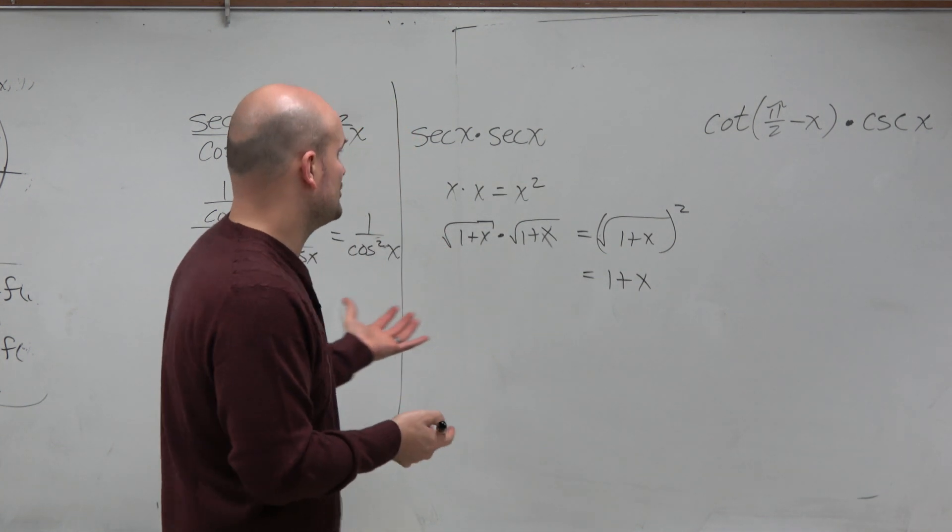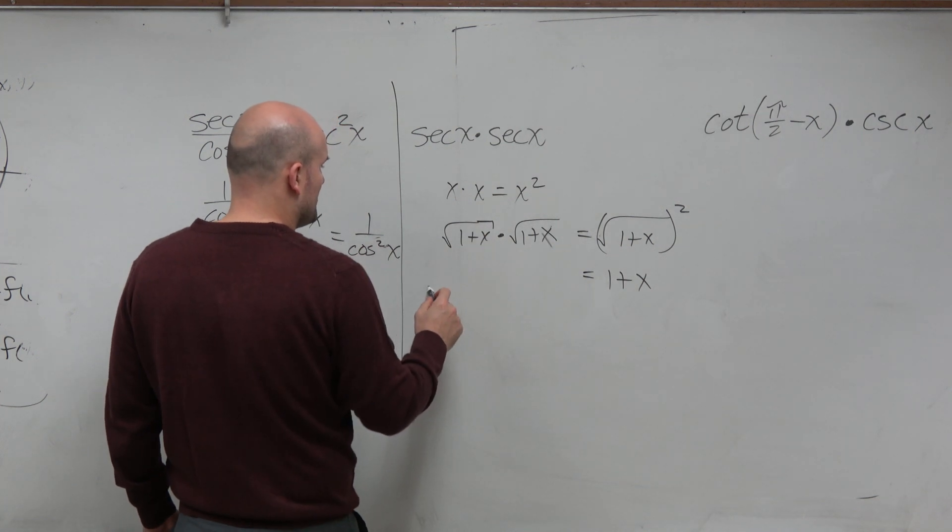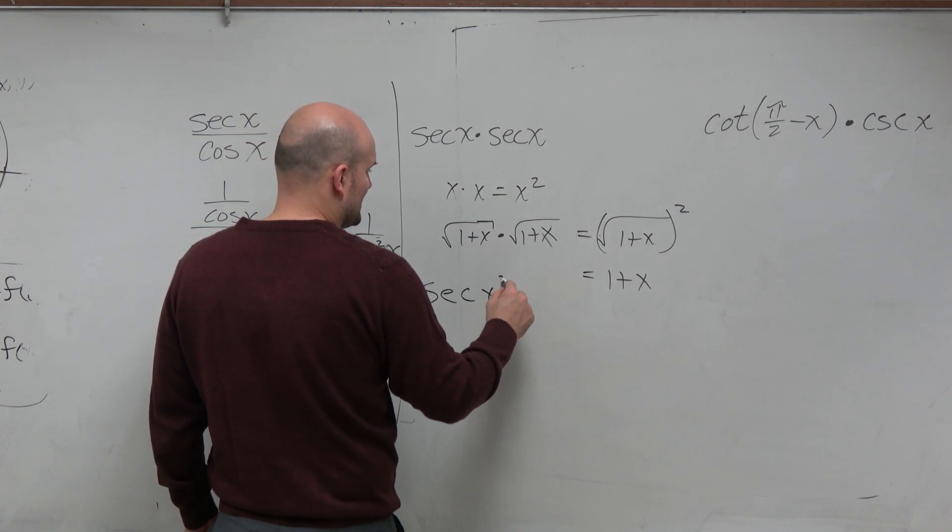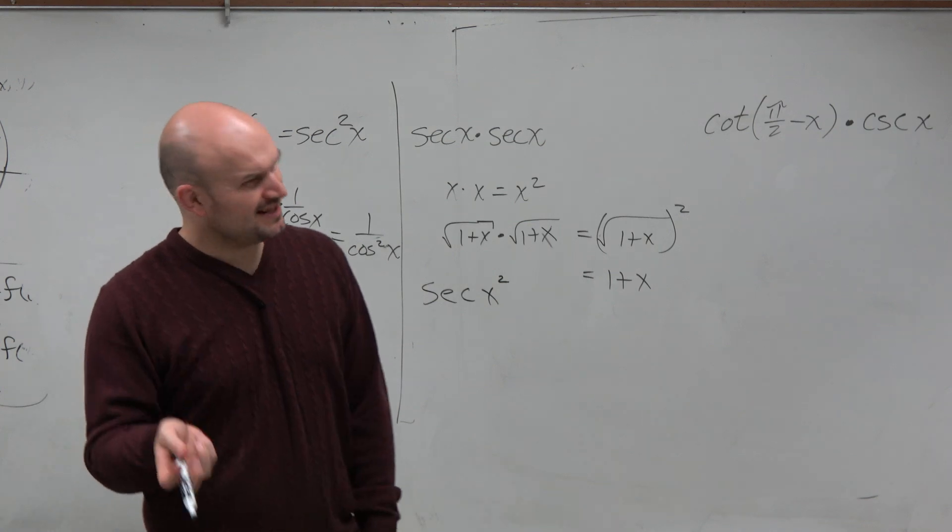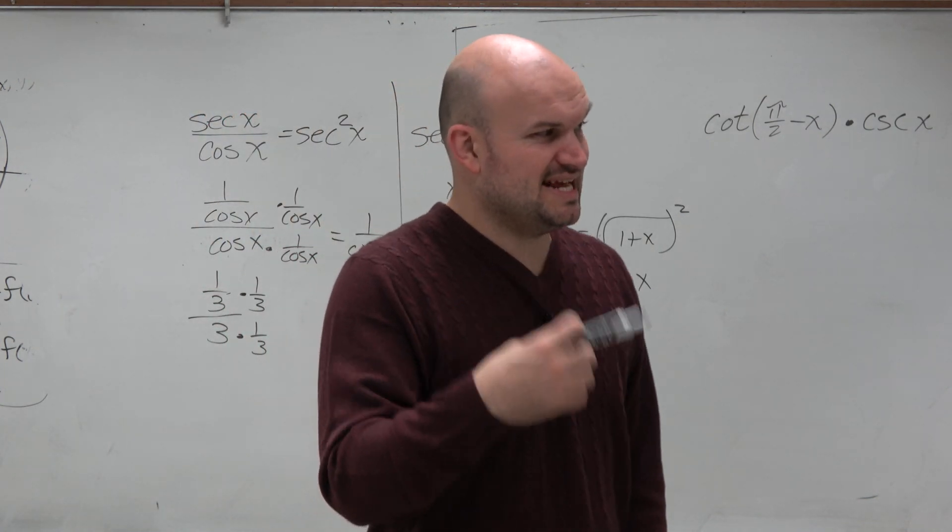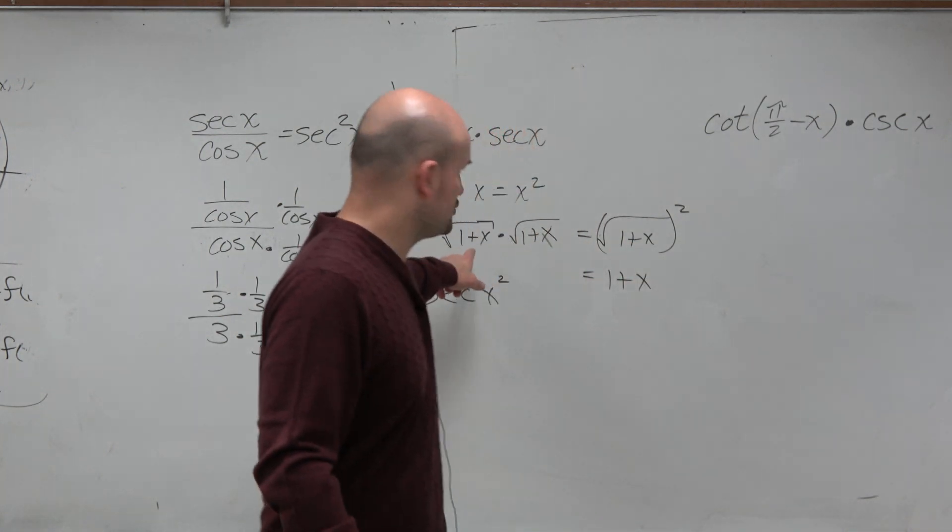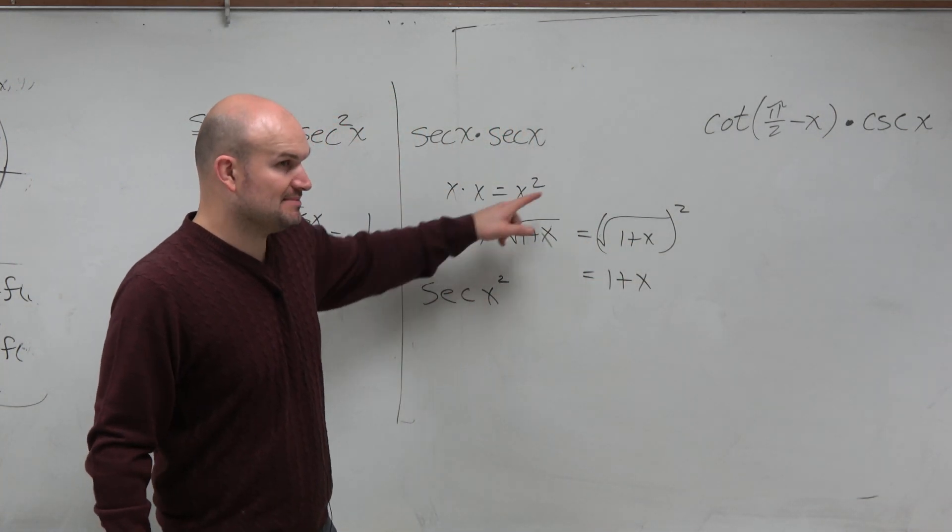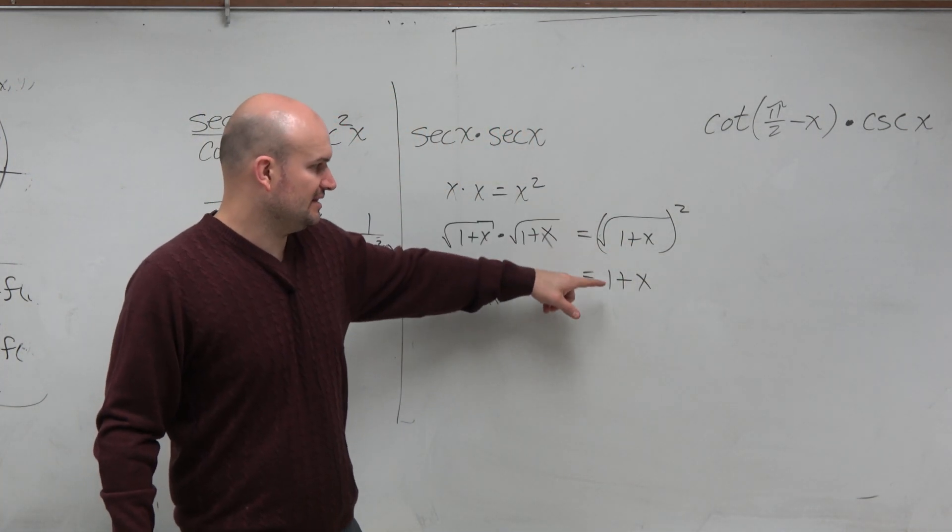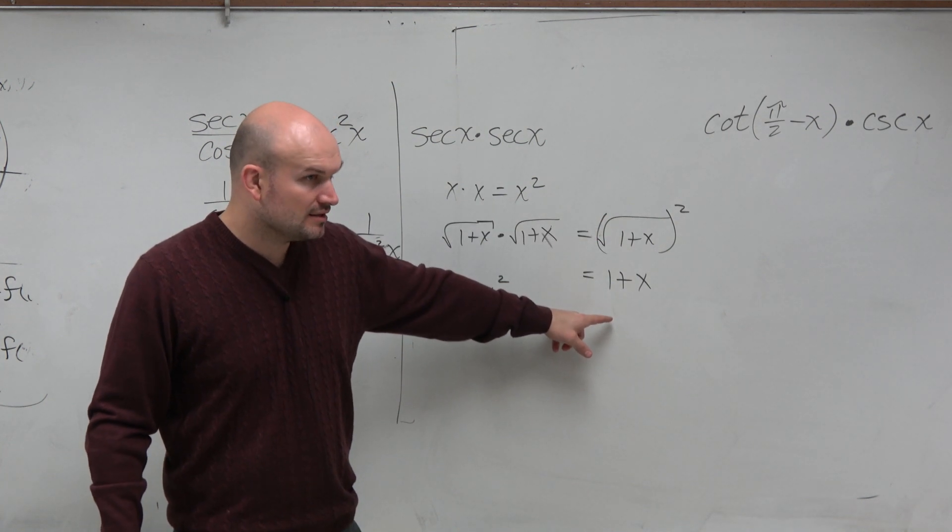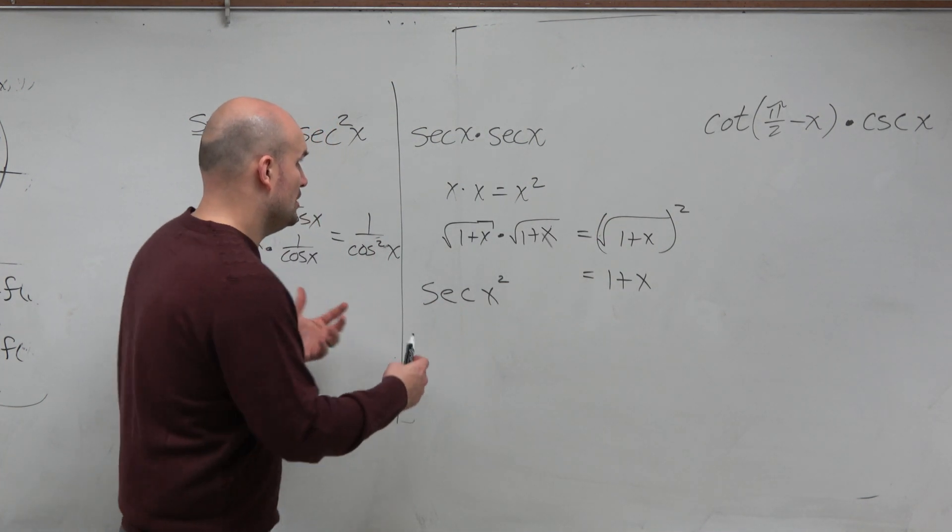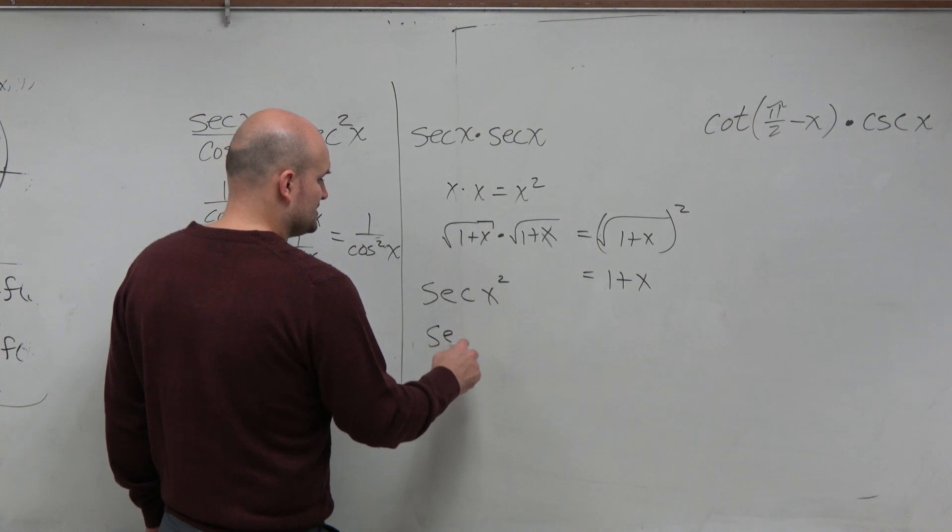So that's how the trigonometric functions are, because the most common mistakes students will give me is a secant of x squared. Well, you've got to think about that. What does that really mean? That means secant of some angle squared. When we took the square root of something times the square root of something, did we get the square root of something squared? No, right? So just be careful when you're doing this.